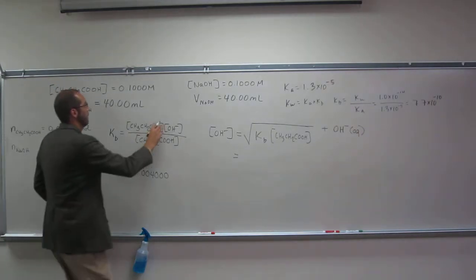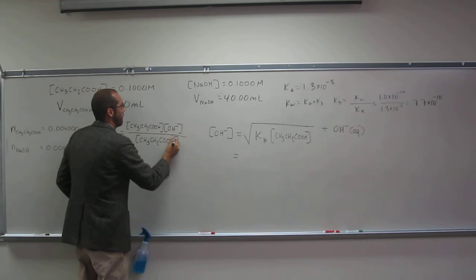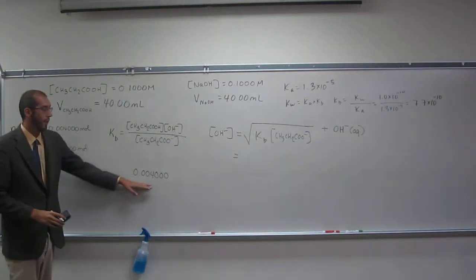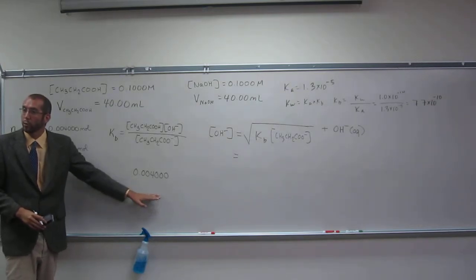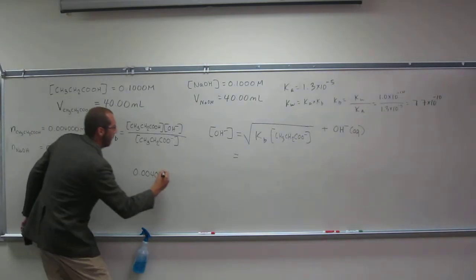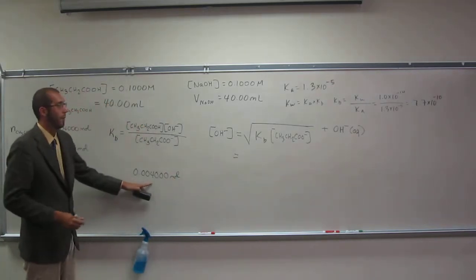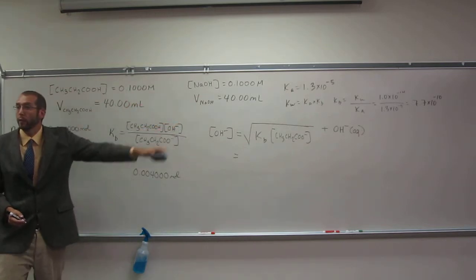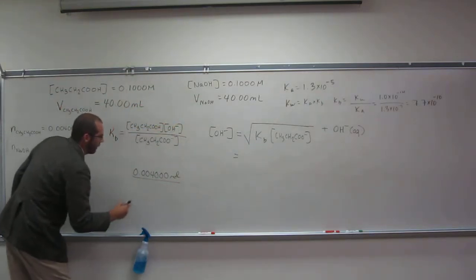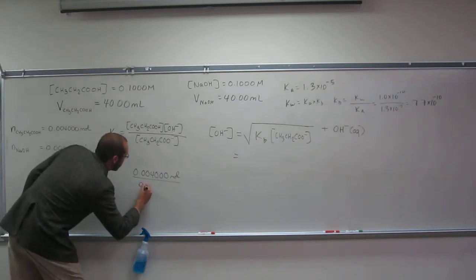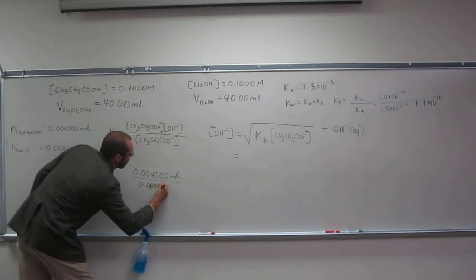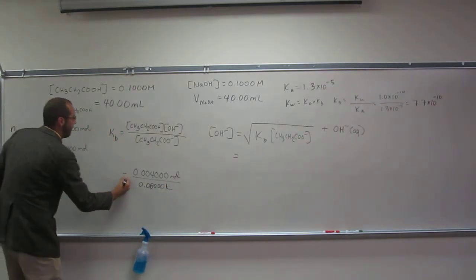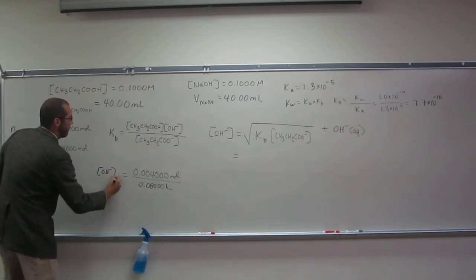Shouldn't there be a concentration of the base? Yes, this is the number of moles of base we have but not the concentration, right? So that's the number of moles. How many mLs do we have? 40 plus 40. So it's going to be divided by 0.08000 liters. That's going to be the concentration.